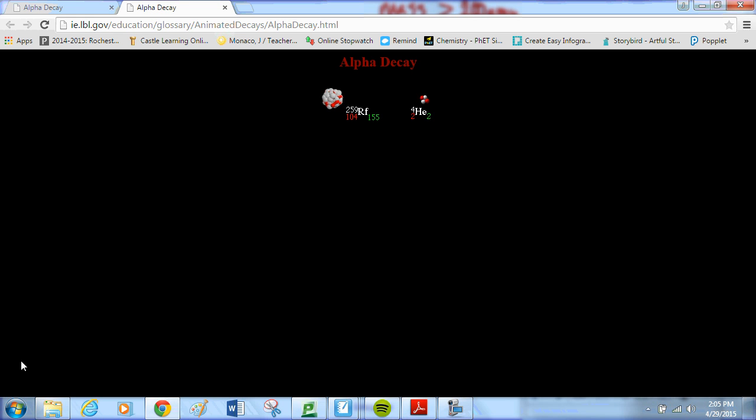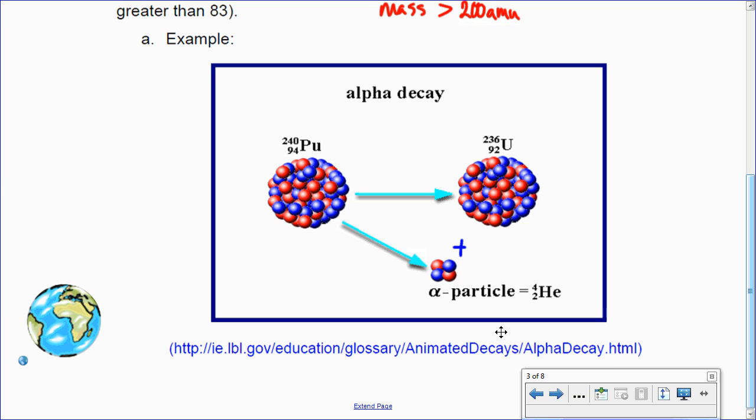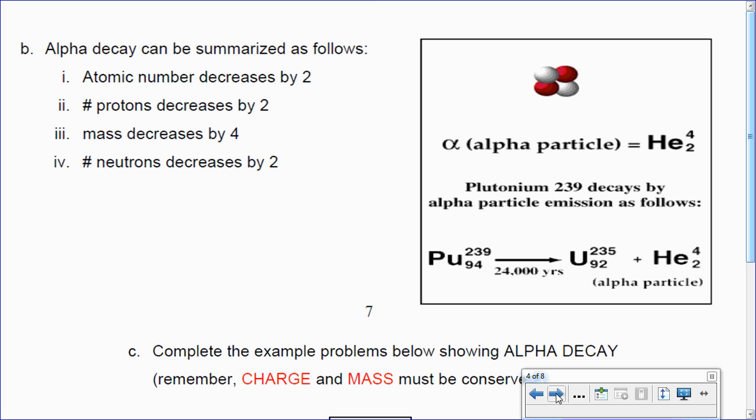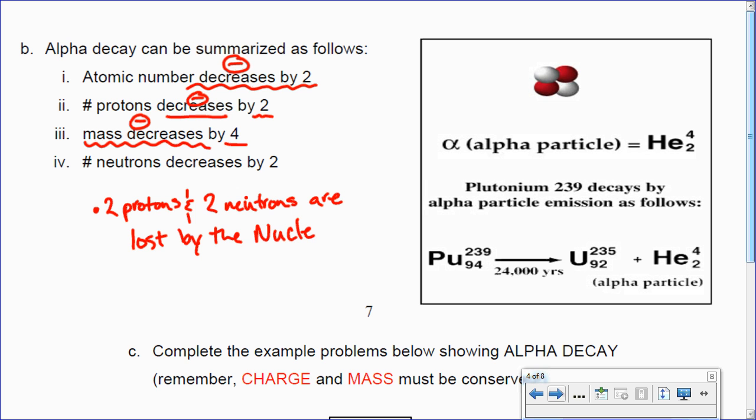If you notice the numbers, they all add up at the end. 259 plus 4 makes 263. And 104 plus 2 makes 106. And 155 plus 2 makes 157. So mass is conserved in any nuclear decay. Let's see. Back to our lecture. Good.